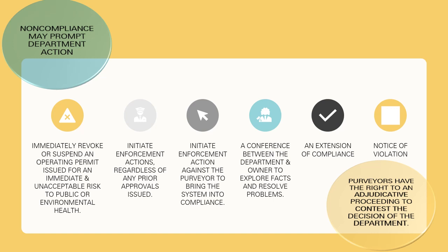Here it's important to note that non-compliance can prompt department action. The department may immediately revoke or suspend an operating permit if there's an immediate or unacceptable risk to public health. They may initiate enforcement actions regardless of any prior approvals issued. They may also attempt to bring the system into compliance by holding a conference between the department and the owner to explore facts and resolve problems. They may issue an extension of compliance if one is requested by the purveyor, which would include a compliance schedule.